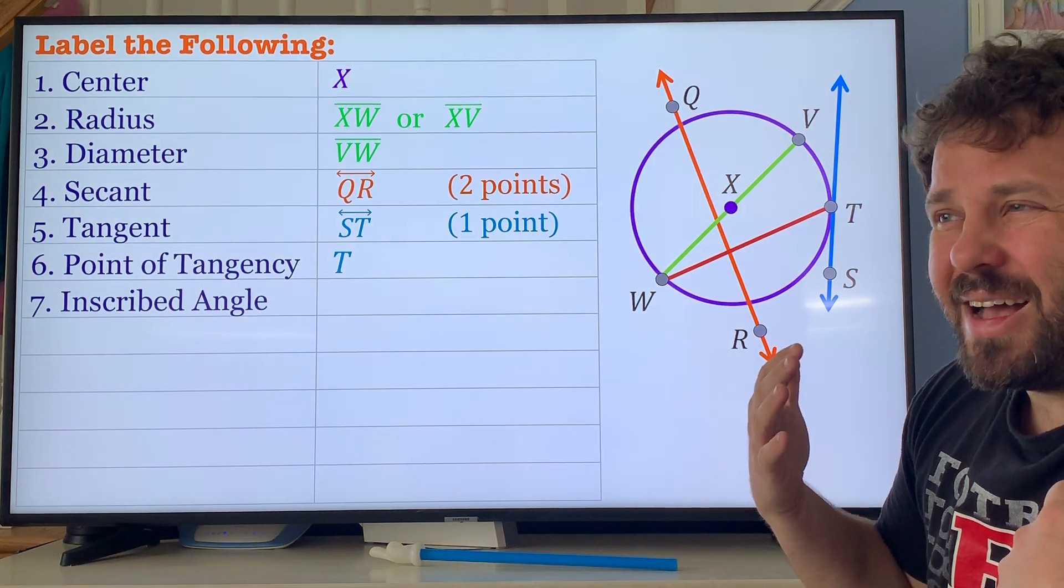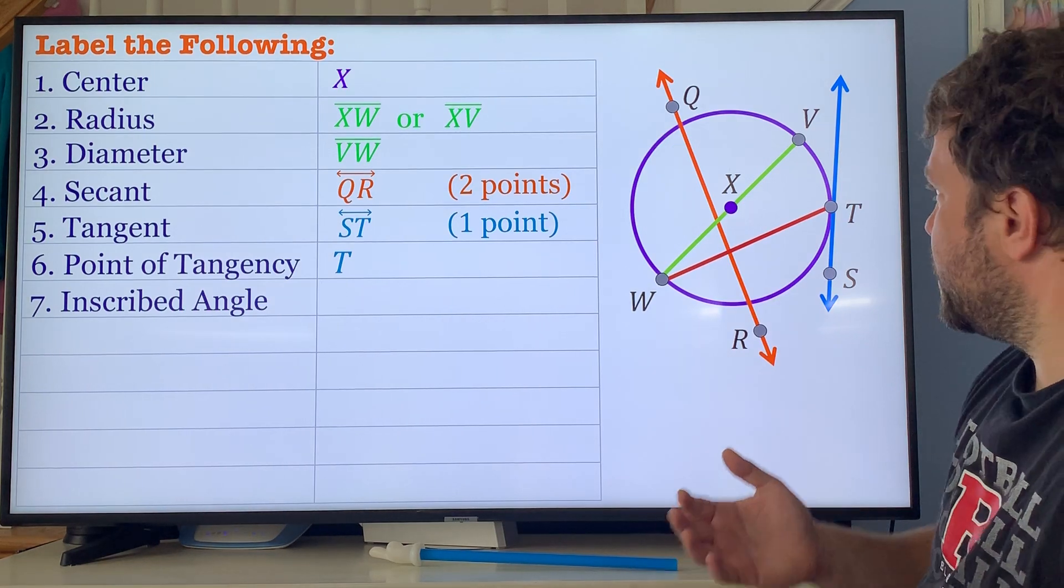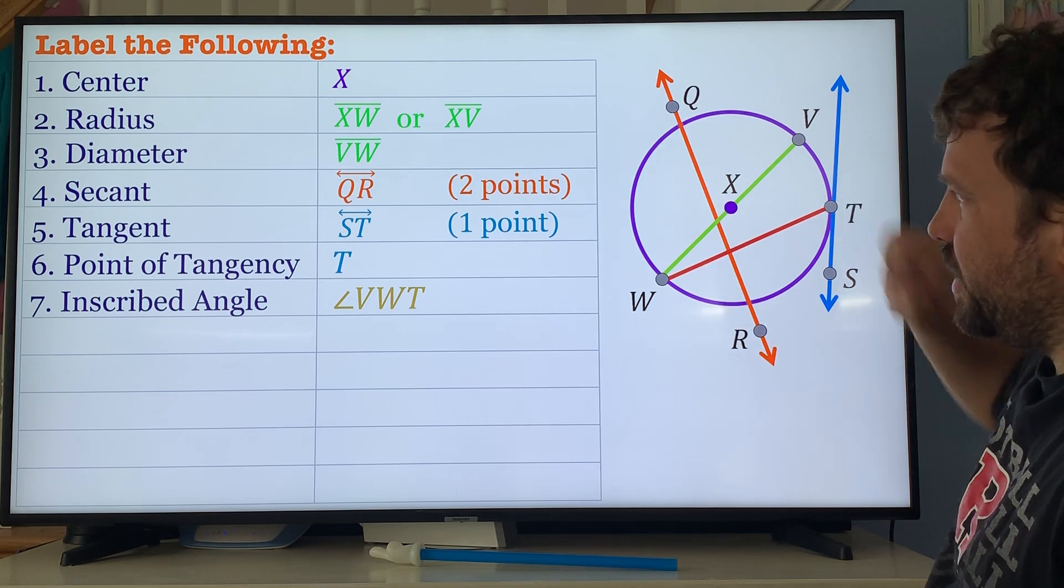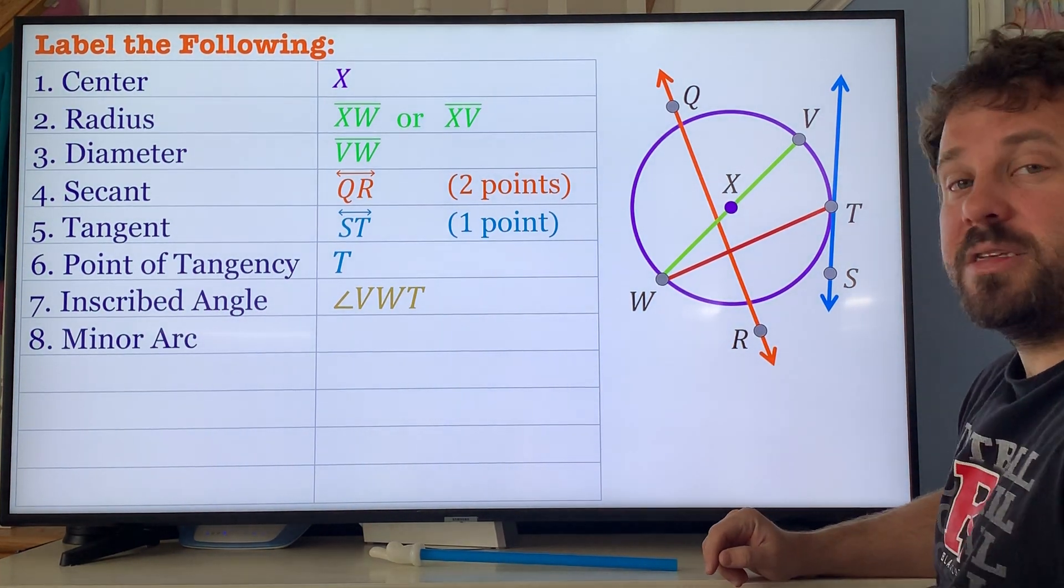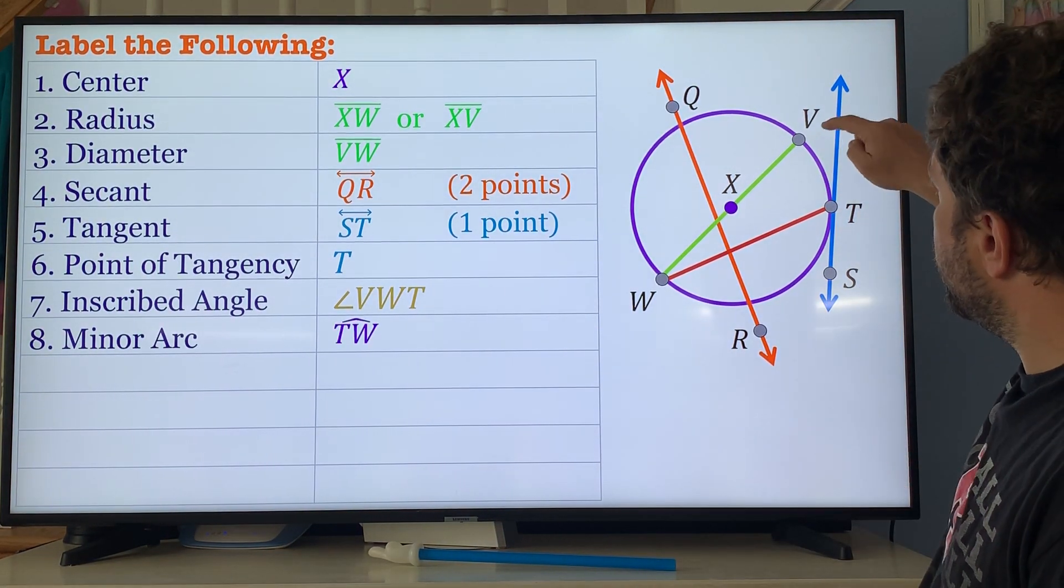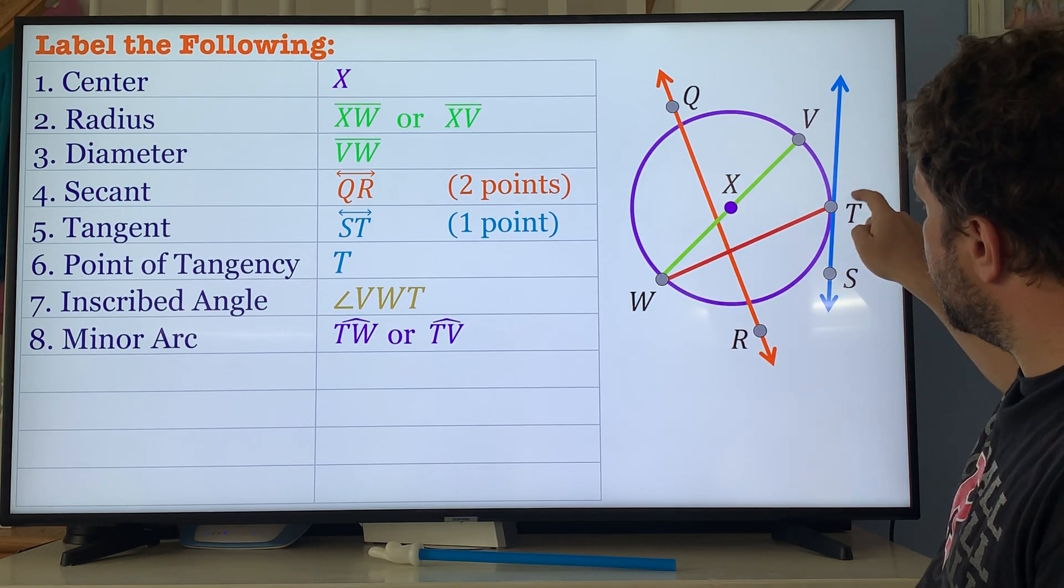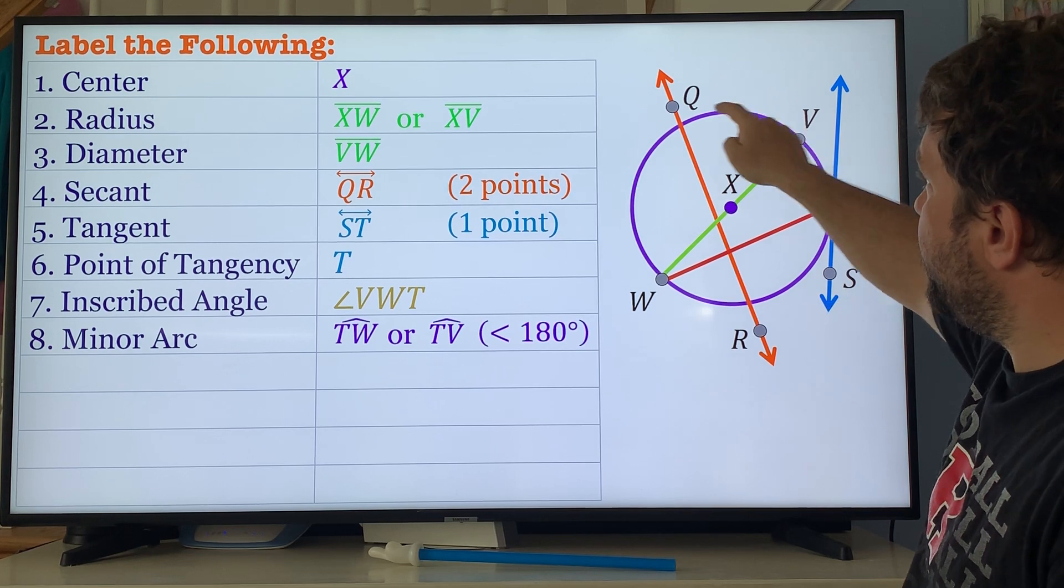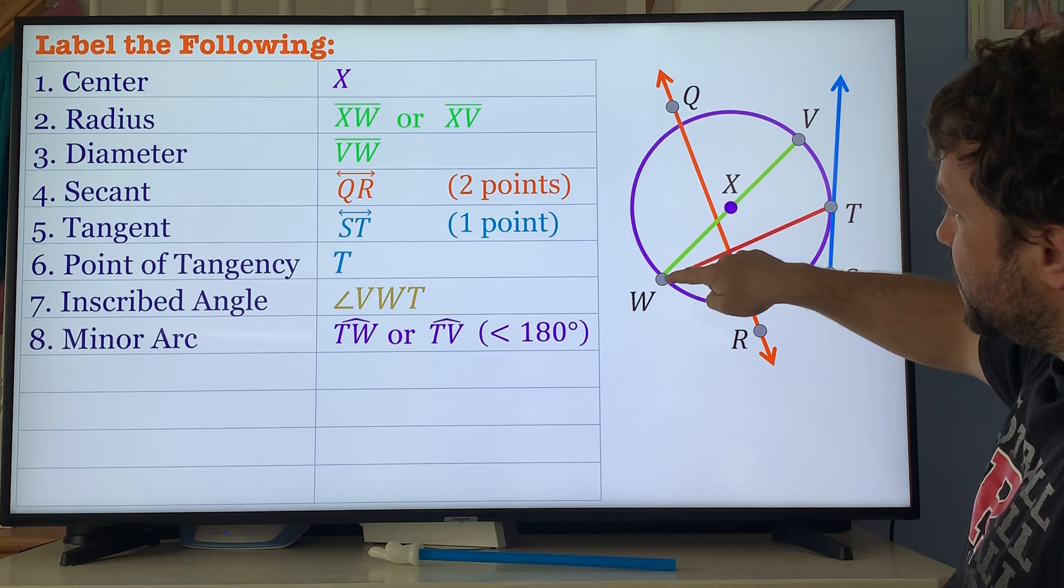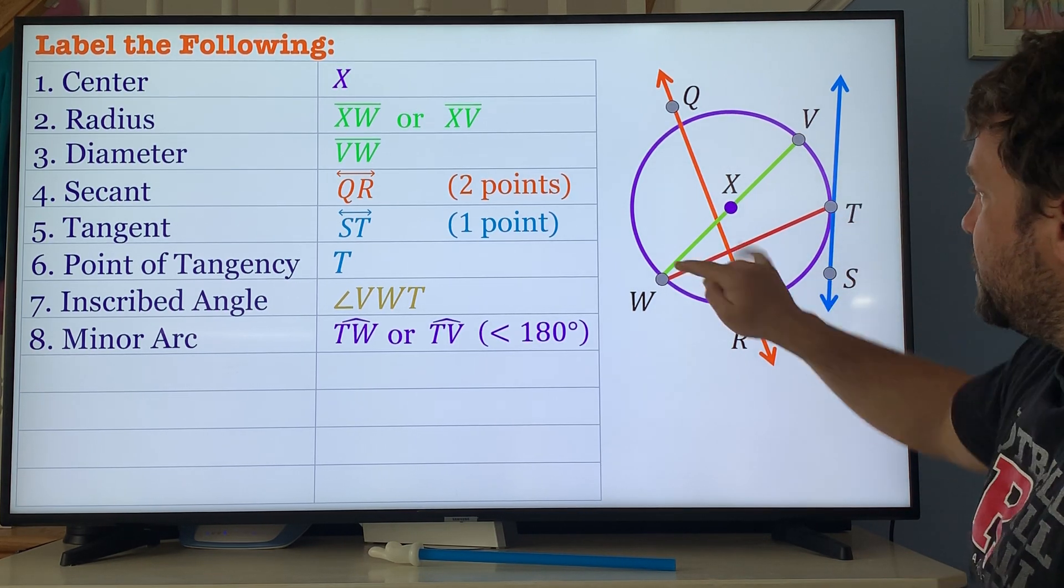Inscribed angle: that is an angle created by two chords on the circle. When it's on the circle, angle VWT or TWV. Minor arc: that is an arc that is less than 180 degrees. There's a couple here. First one is arc TW, you also got TV. VW is not less than 180 so you can't say that. Just those two, VT and TW.